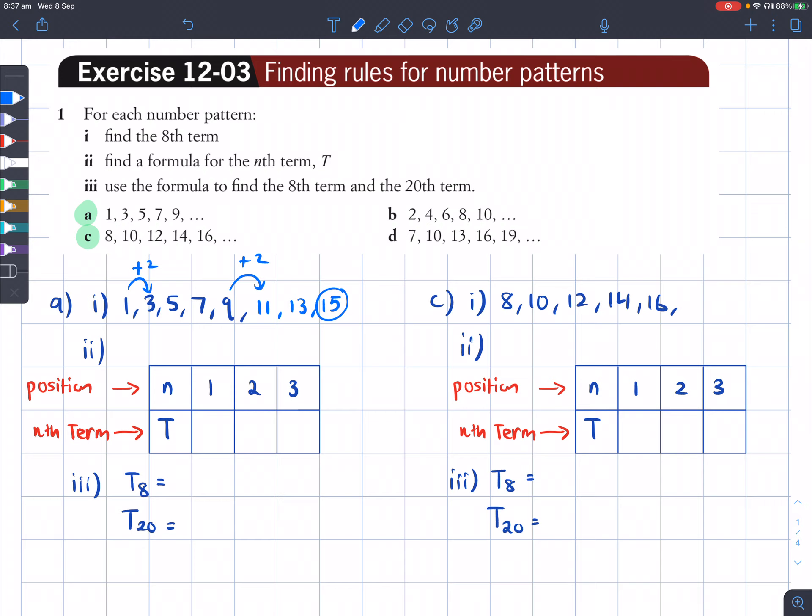Then we go to our second part, which says find a formula for the nth term. To find out the nth term T, which is the rule, we actually have to draw a table. I've drawn it up to the first 3 numbers. This top row, which represents n values, represents position. So for the first position, we've got the number 1. I'm going to write that down, number 1.